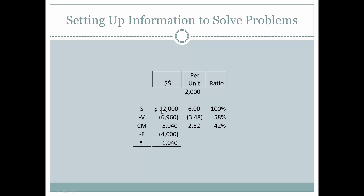This column represents total dollars. This represents the total dollar sales of $12,000. This represents the total variable cost of $6,960. This represents the contribution margin from which we are subtracting the fixed expenses in order to yield the profit. We are talking in this instance about 2,000 units that were sold. Using the number of units sold for those things that vary in relationship to units sold — the sales price, variable expenses, and contribution margin — we can take the total dollars and divide by the number of units sold to determine the price per unit.